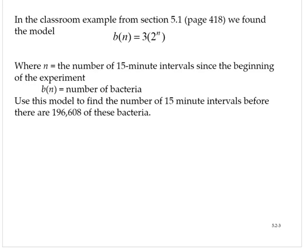In the classroom example from section 5.1 on page 418, we found the model b(n) = 3(2^n), where n is the number of 15-minute intervals since the beginning of the experiment, and b(n) is the number of bacteria. Use this model to find the number of 15-minute intervals before there are 196,608 of these bacteria.